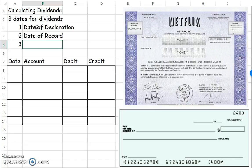And the third one is the date of payment. So on the first date, we set up the liability. And on the third one, we're actually going to pay that liability.